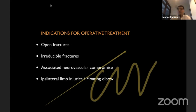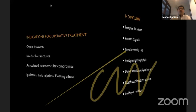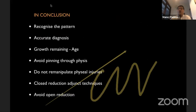Associated neurovascular compromise — I talked about carpal tunnel in physeal injuries. Ipsilateral limb injuries, especially a floating elbow, require stabilization of both the elbow fracture and the distal radius. In conclusion: recognize the pattern — don't treat distal radius as one single entity. With the various combinations of physis, metaphysis, epimetaphysis, and metadiaphysis along with the ulna and the various biomechanical patterns, you can have close to about 20 different fracture patterns. Accurate diagnosis is important to manage appropriately, anticipate problems, counsel the family, and get predictable outcomes. Growth remaining is a huge factor — use a cutoff of below 10 years versus above 10 years. Under 10 you can accept a lot more. Avoid pinning as far as possible; never go through the physis. Do not re-manipulate physeal injuries — you will inevitably cause growth arrest. Accept a bit of malalignment; they will remodel. Be familiar with closed reduction and adjunct techniques, and avoid open reduction.